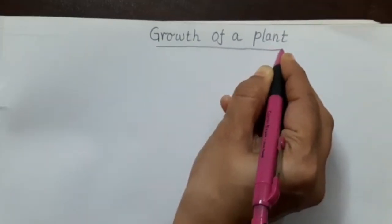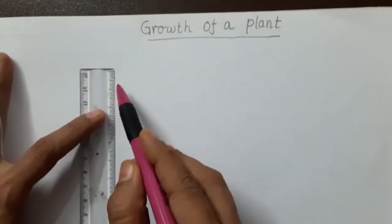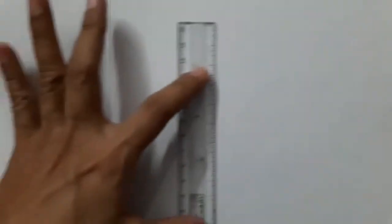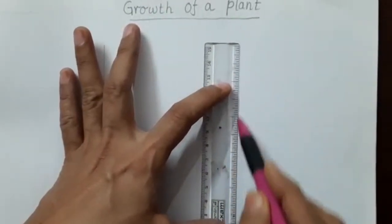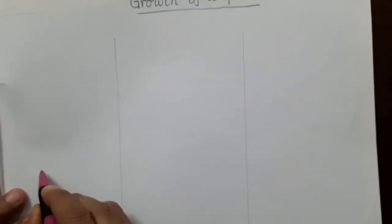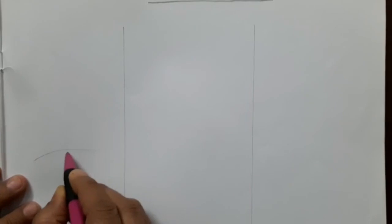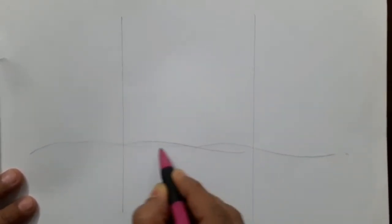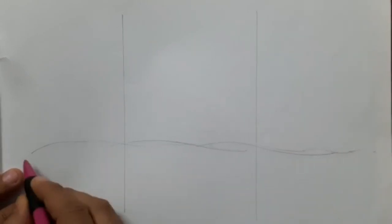Now we are going to draw three stages of growth of a plant. After writing the heading, we are going to draw two lines to make columns like this. Now first of all, we will draw the soil, the ground.